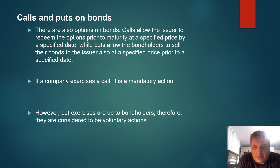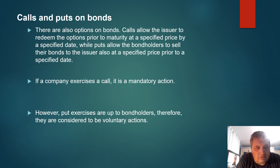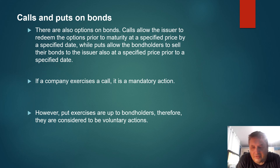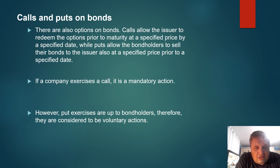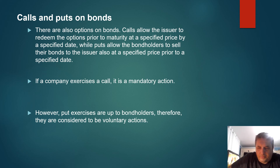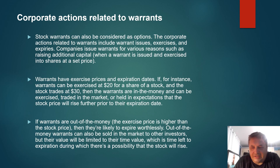There are also options on bonds — calls and puts. Call options allow the issuer to redeem the bonds prior to maturity at a specified price by a specified date, while put options allow bondholders to sell their bonds to the issuer at a specified price prior to a specified date. If a company exercises a call, it is a mandatory action. However, put exercises are up to bondholders, so they are generally considered voluntary actions. Not every bond comes with attached calls or puts — only some of them do.